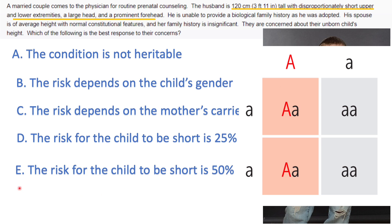The correct answer is E. I really hope you're able to draw Punnett diagrams because they're very easy. You put the father here and the mother here — we know this is autosomal dominant — you put the allele in and mix and match: this with that, and this with that. So you have two out of four, and this with that, and this with that. That's how you draw it.